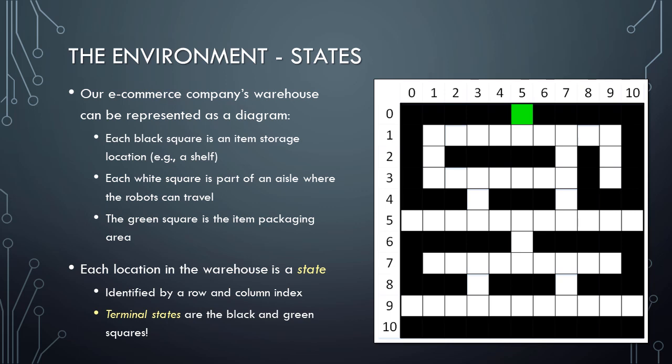In the case of the green square, our AI agent will have achieved its goal, but in the case of any of the black squares, the AI agent will have failed, since it will have crashed the robot into an item storage area. This sort of failure is conceptually identical to falling down the cliff in the famous cliff-walking example that we discussed in the previous video in this series.